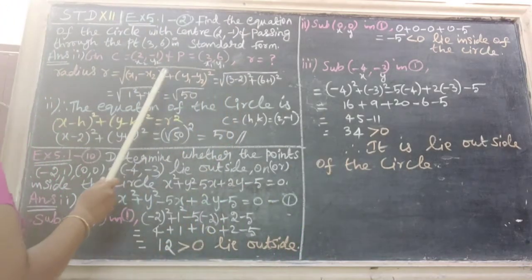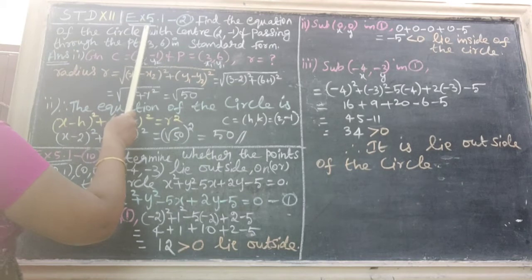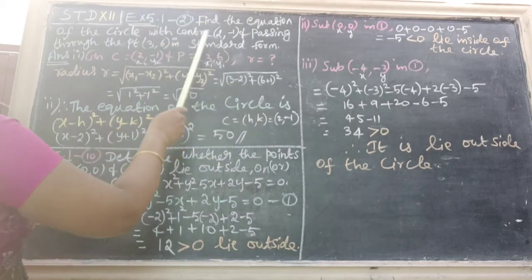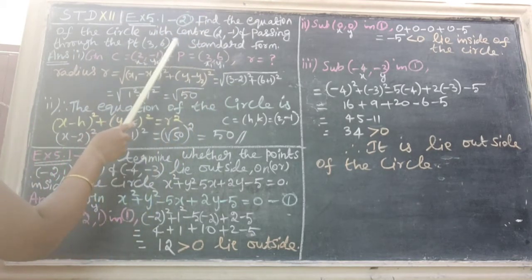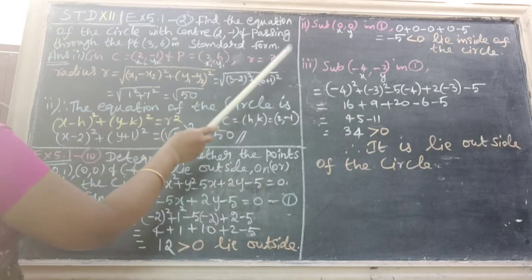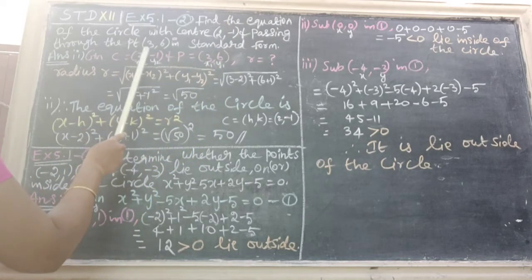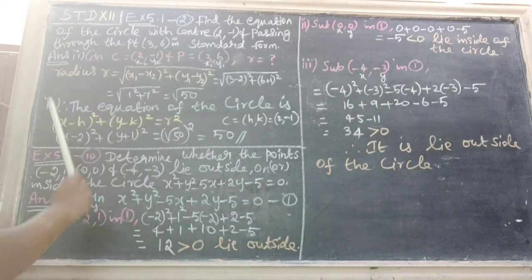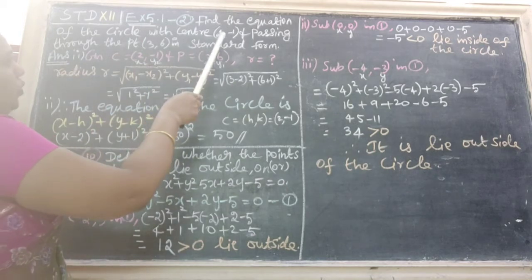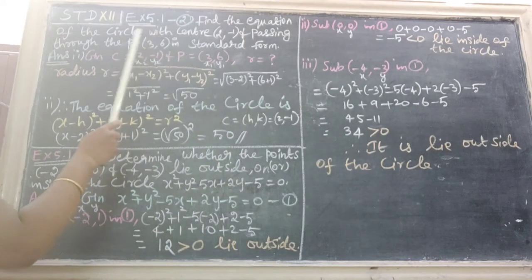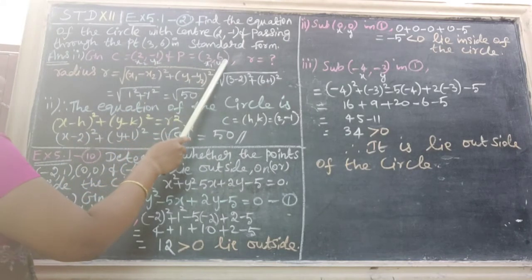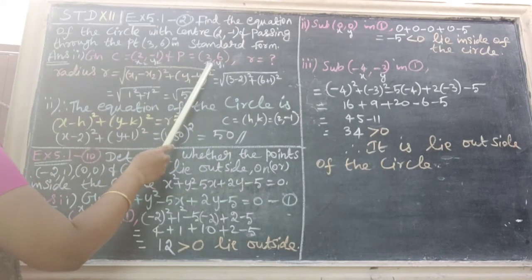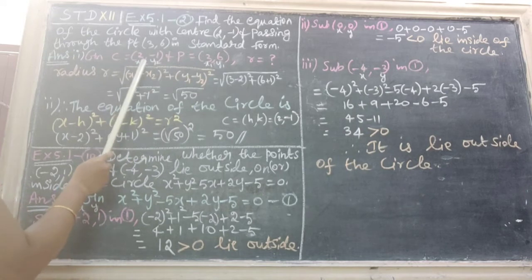First, we'll see two more questions from Exercise 5.1. The second question: find the equation of the circle with center 2 comma minus 1 and passing through the point 3 comma 6 in standard form. Here, given center C equals 2 comma minus 1 and the point P equals 3 comma 6. We take here x1, y1 as C and x2, y2 as P.